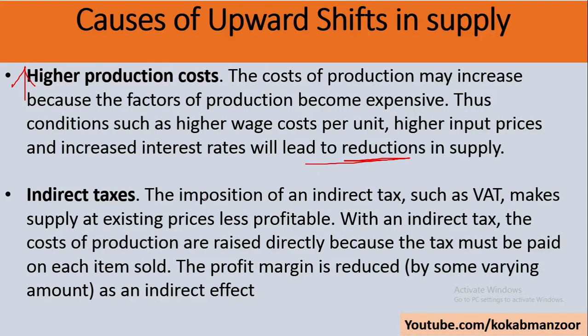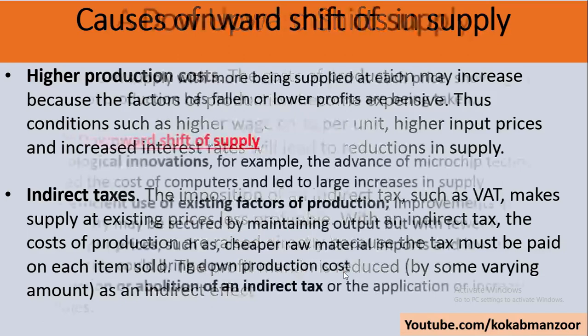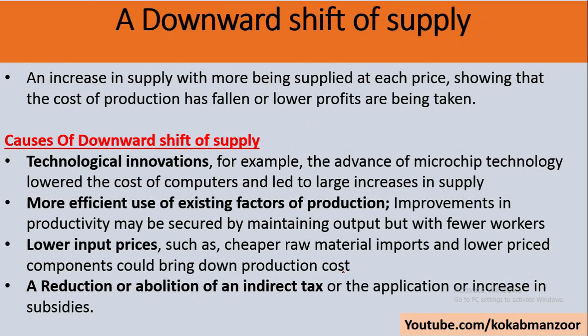Similarly, indirect taxes such as value-added tax make production less profitable. If the seller cannot increase the price — knowing that doing so would decrease demand in the market — the seller will instead produce less and supply less, because the profit margin is reduced. This causes a downward shift in the supply curve.